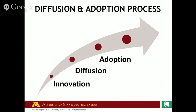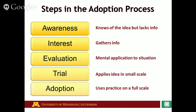Our third step, which has a lot more detail associated with it, is going to be the adoption process itself. The steps within the adoption process — we see here that we have five steps, the first being awareness. An individual knows of the idea but lacks information about it. They're aware that it exists, but they don't know enough to determine if they want to invest more time and effort into it.